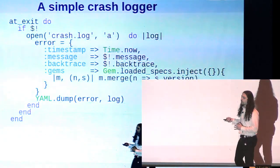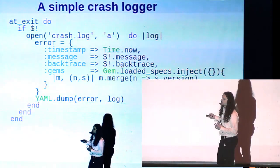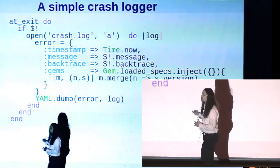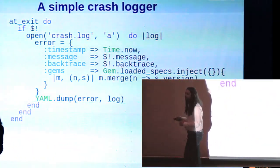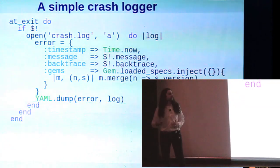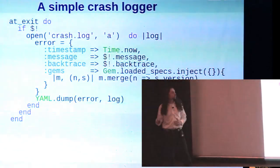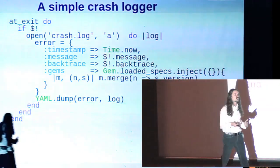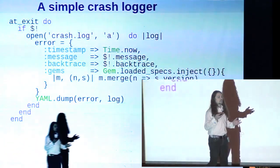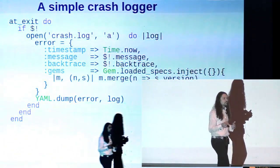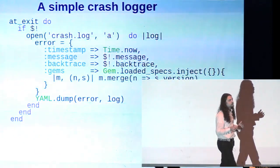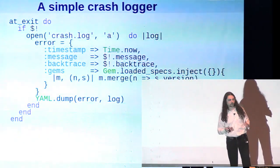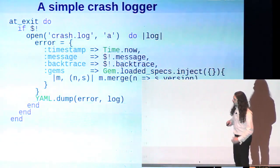You want to just sort of plug a crash handler in. Well, you can if you use an at exit block. At exit is normally executed when the program ends. But how do we know if the program is ending normally or if it's ending because of an unhandled exception? Well, that's where this dollar bang, this error info variable comes in. We can check that and say, oh, this is ending because an exception was raised, so we're going to log some information about it. In this case, we're logging the time, logging some stuff from the exception itself. We're also logging the version of all the gems that were loaded at the time of the failure.